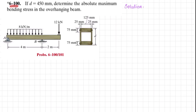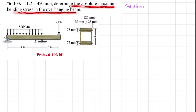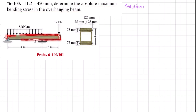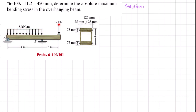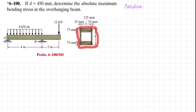Welcome back. Problem 6-100: if d is 450 millimeters, determine the absolute maximum bending stress in an overhanging beam. This is an overhanging beam with a distributed load of 8 kilonewtons per meter over a length of 4 meters, and at the end there is a point load of 12 kilonewtons. The cross-section of the beam is shown, and d is 450 millimeters.